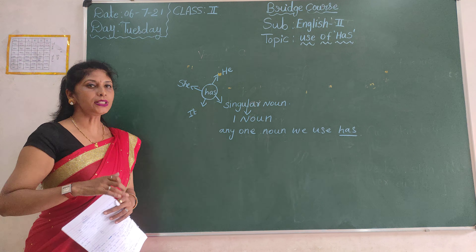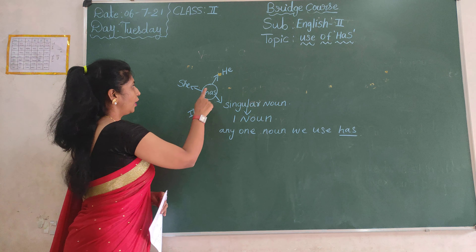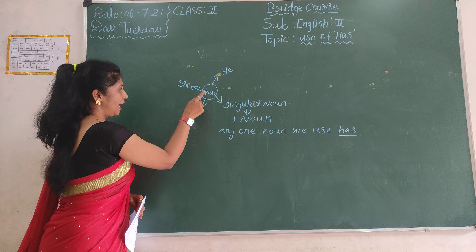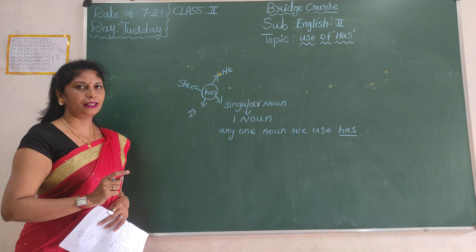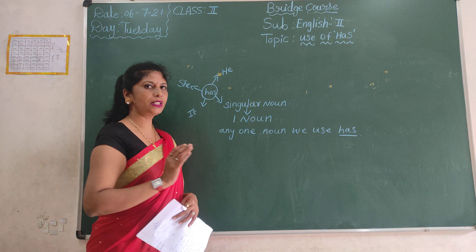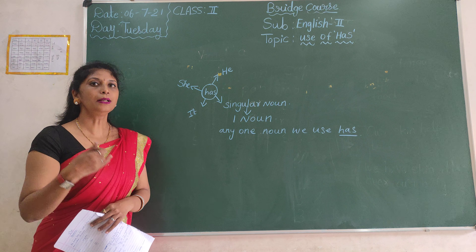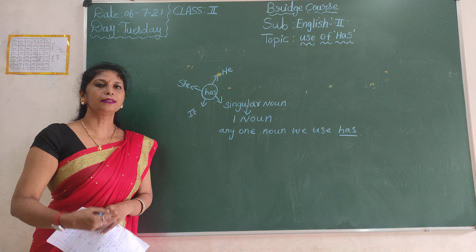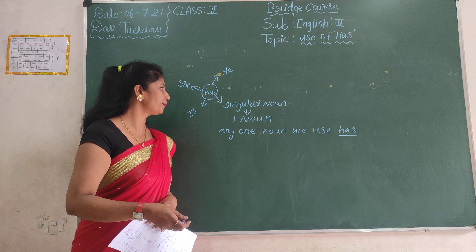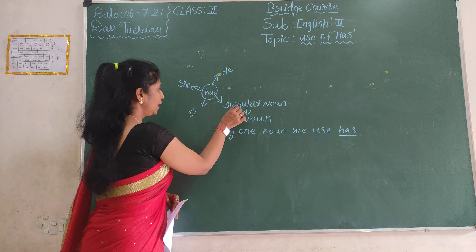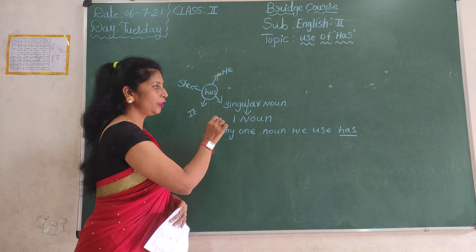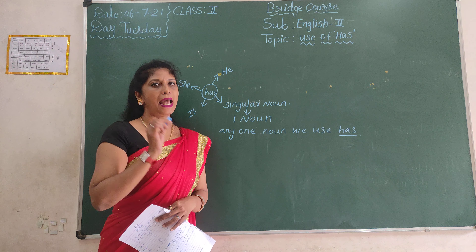We use 'has' for he — he has. She has. It has. Next is singular noun. What is a noun, children? The name of a person, place, animal, or thing. A singular noun — any one noun — we use 'has'.